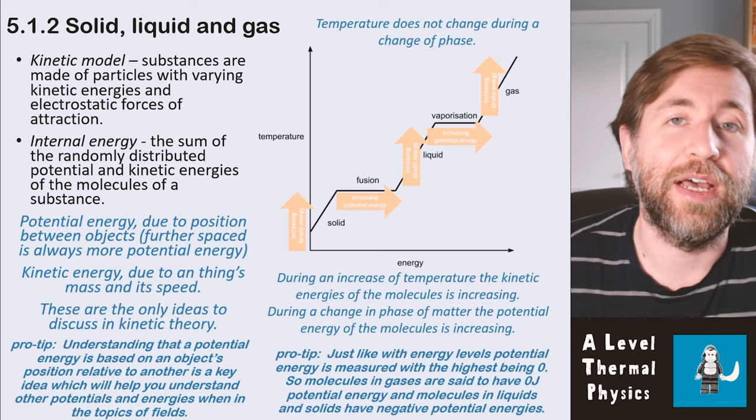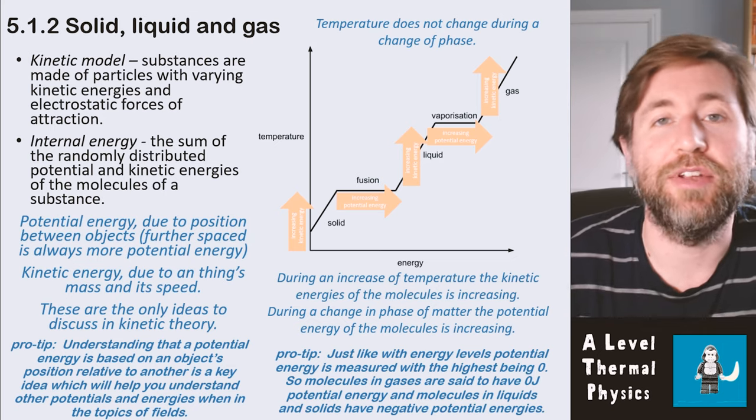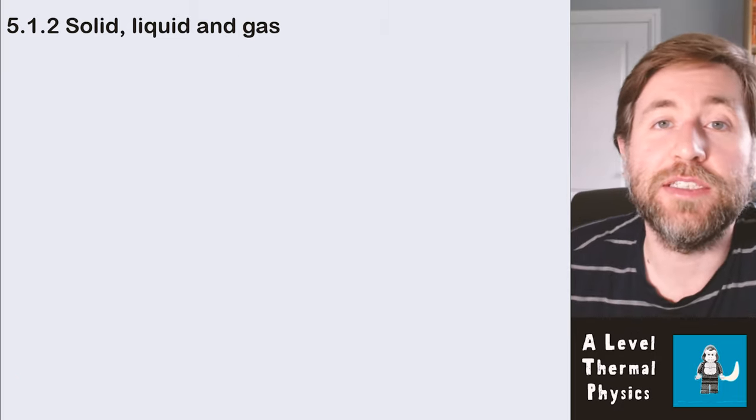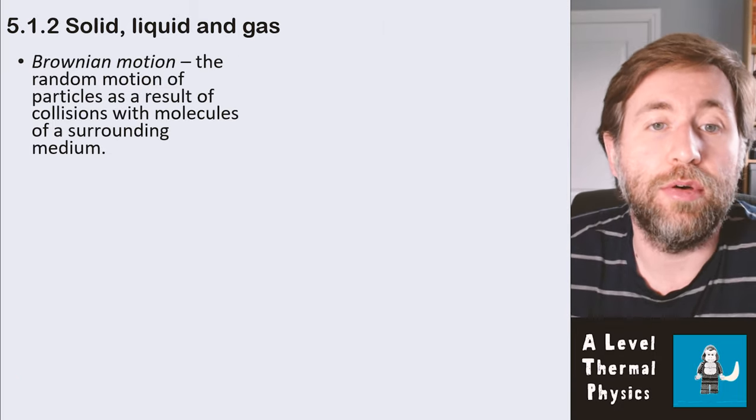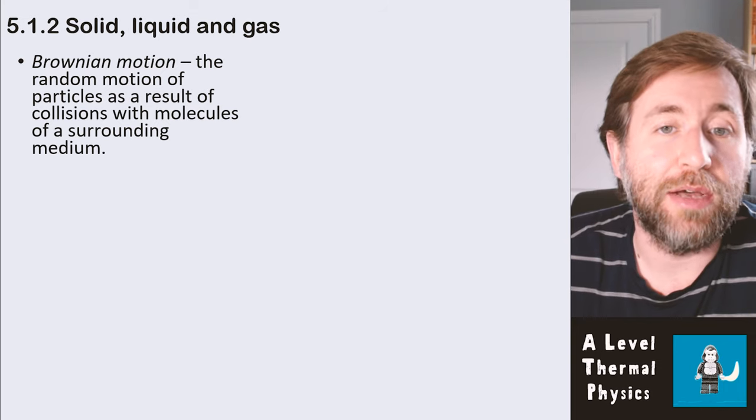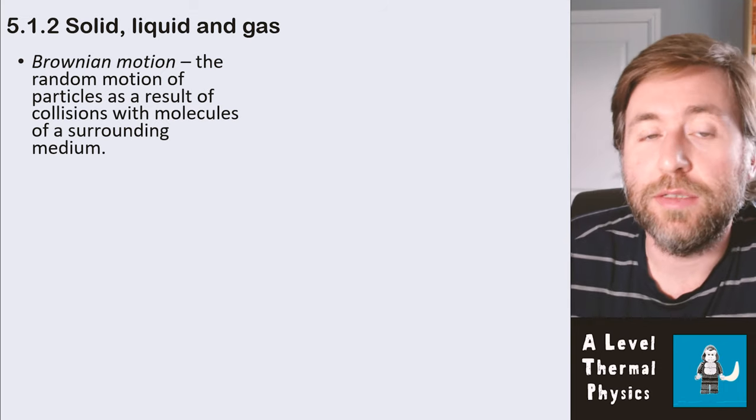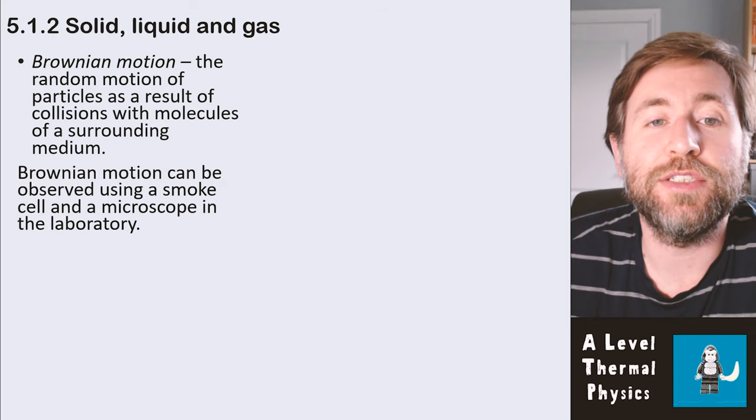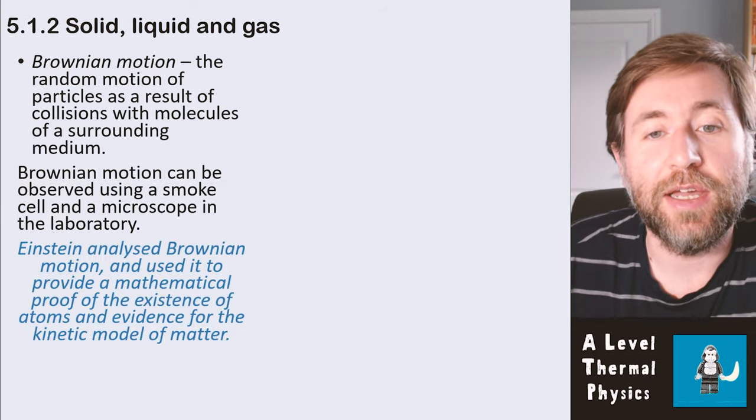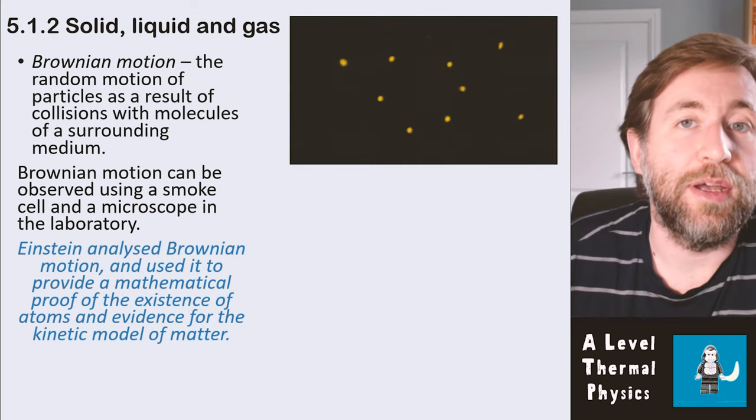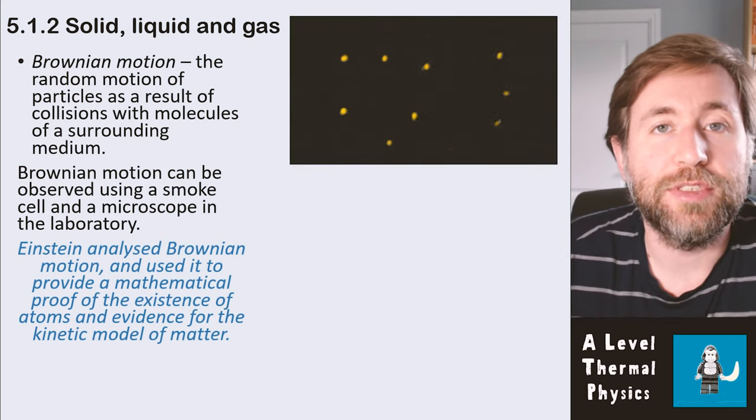So although you can't have negative energies, you can have a negative energy difference. Kinetic theory all began when Brown noticed the random motion of particles, and we call this Brownian motion. We now know that's a result of collisions with the molecules of a surrounding medium. We can actually observe that in a lab under a microscope by using a smoke cell.